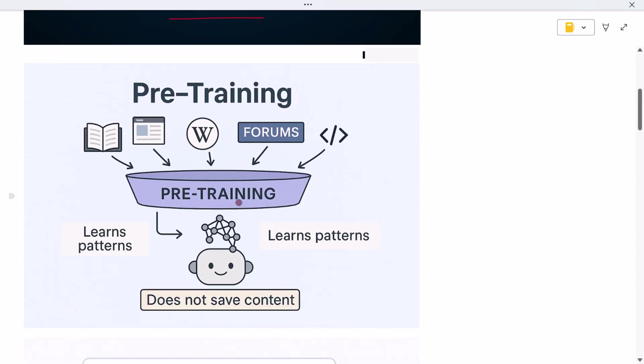First comes something called pre-training. This is where it all begins. ChatGPT was trained on a massive collection of text: books, websites, Wikipedia pages, articles, forum posts, even open source code. Basically anything written by humans that was available to use.